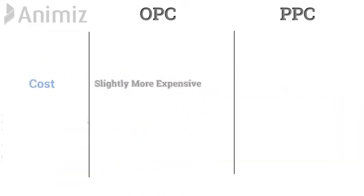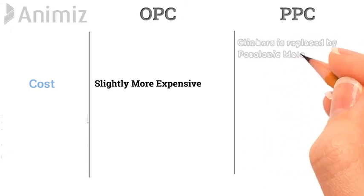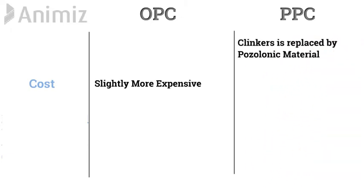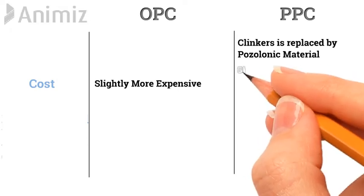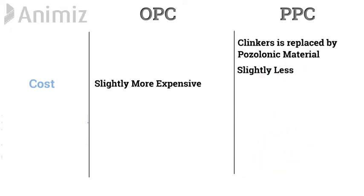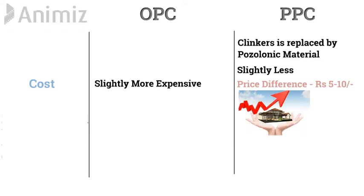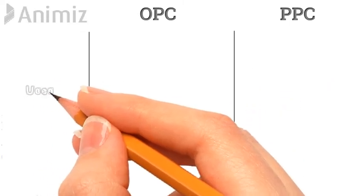Cost: OPC is slightly more expensive compared to PPC. In the case of PPC, the expensive clinker is replaced by pozzolanic material such as fly ash. Hence, the price of PPC is slightly less compared to OPC. Generally, there is a price difference of 5 to 10 rupees, but this slight price difference generates a considerable difference in the overall cost of a building.